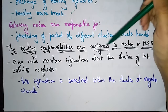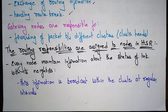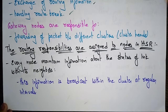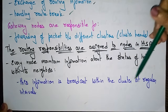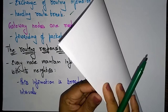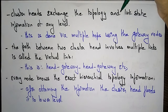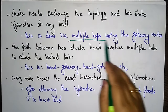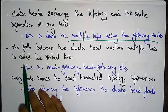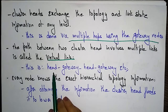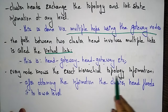Routing responsibilities are assigned to nodes in HSR as follows: every node maintains information about the status of the link with its neighbors, and this information is broadcast within the cluster at regular intervals. The cluster heads exchange topology and link state information at any level. This is done via multiple hops using the gateway nodes. The path between two cluster heads involves multiple links and is called a virtual link.